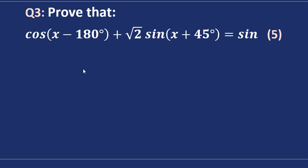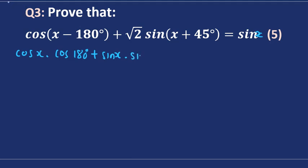Moving on to question 3. We have to prove that the left-hand side equals the right-hand side, which is sine x. We need to use our compound angle identities. Expanding the first term using the compound angle identity for cosine gives: cosine x times cosine 180 degrees, minus sine x times sine 180 degrees. Now we expand the second term using the compound angle formula for sine.